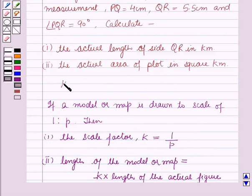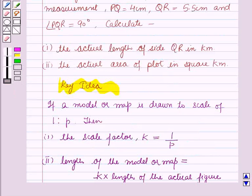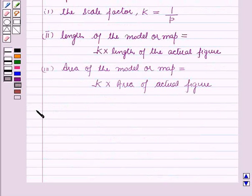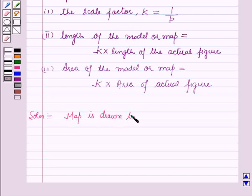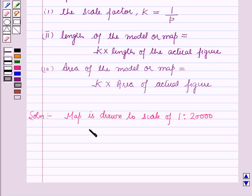This will work as the key idea for solving this question. Now, it is given that the map is drawn to a scale of 1 is to 20,000. This means the scale factor k will be equal to 1 over 20,000.